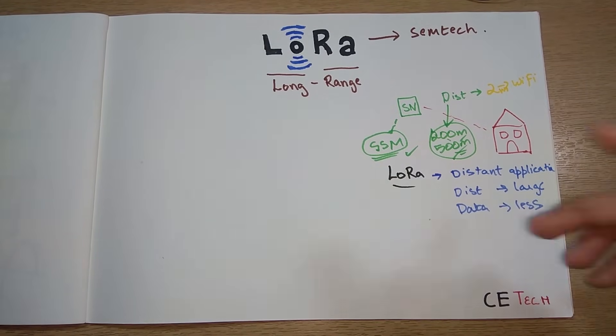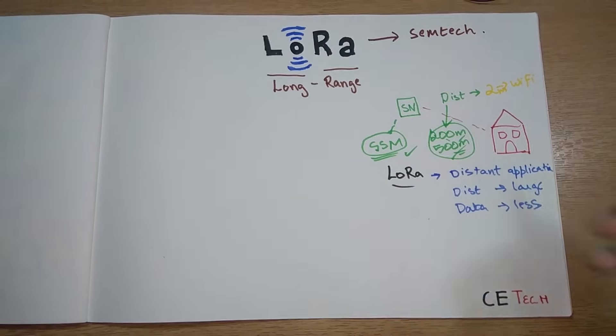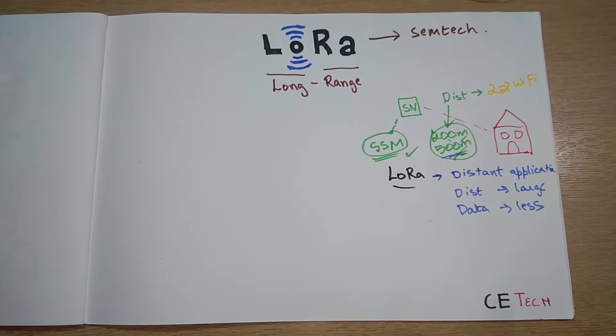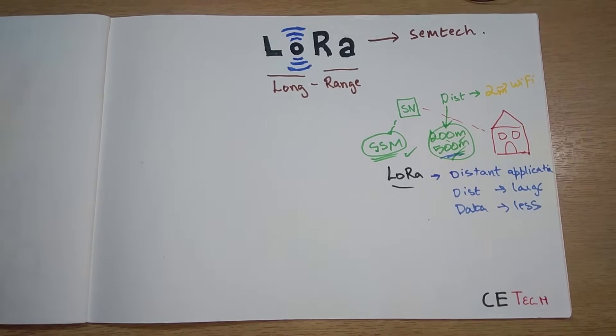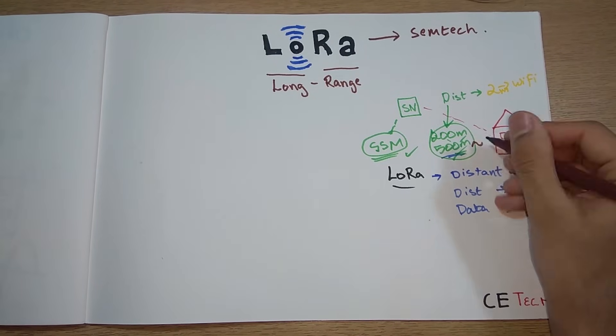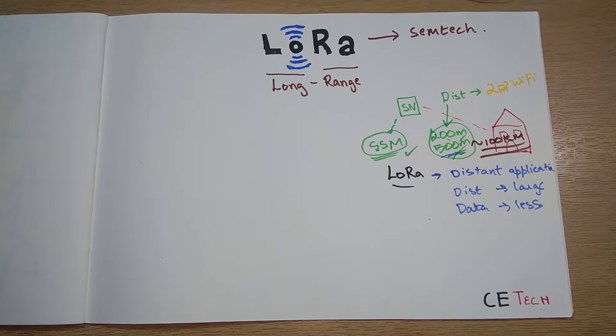One good feature is that you can achieve very large distances. 500 meters is very easy. If you use a better antenna, better line of sight and things like that, you can achieve distances up to 100 kilometers.